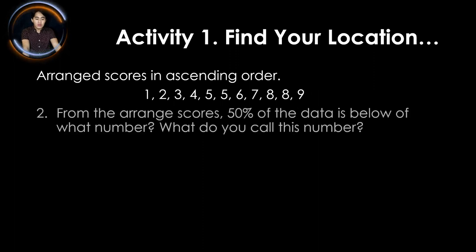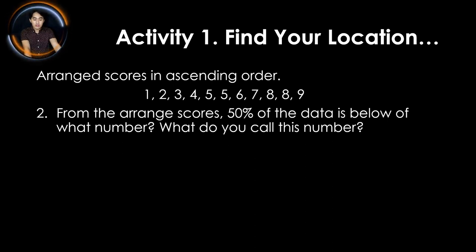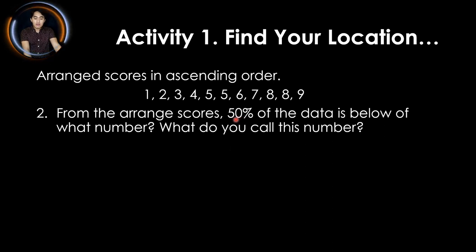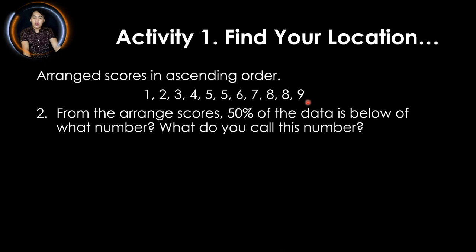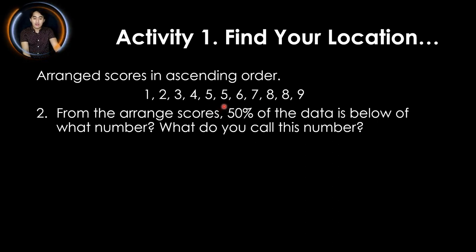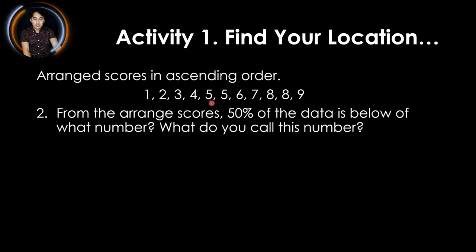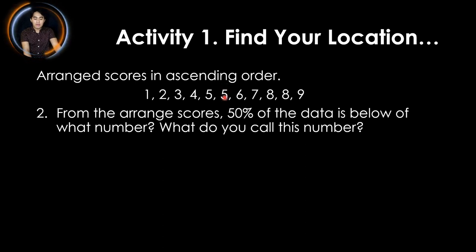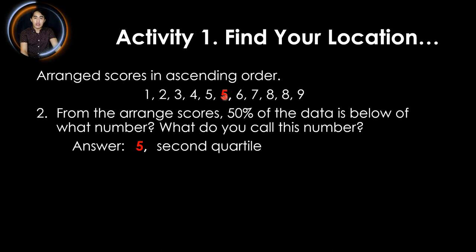For task 2, from the arranged scores, 50% of the data is below what number? Take note that 50% of the data is the median score. Since there are 11 scores, the 6th score is our median or 50% of the data. Counting: 1, 2, 3, 4, 5, 6 — which is the second 5 — this is our 50% of the data. Therefore that is 5, and what do you call this number? This is the second quartile or the median score.